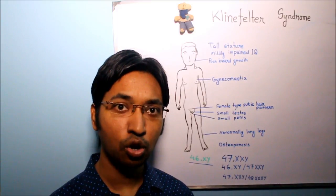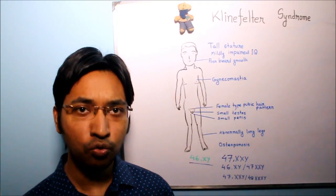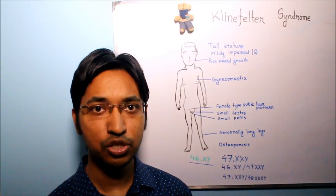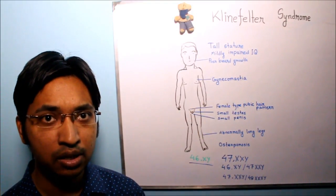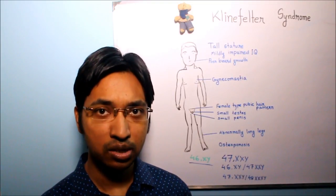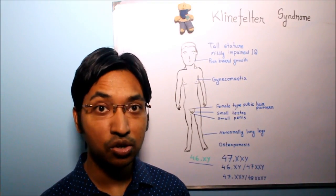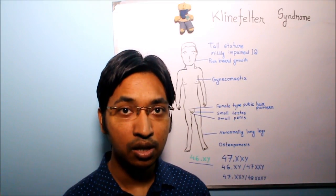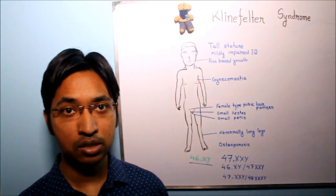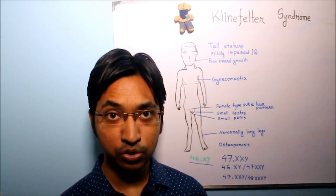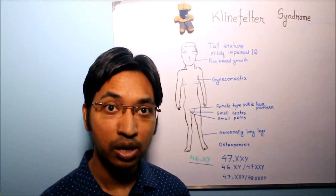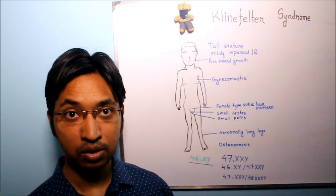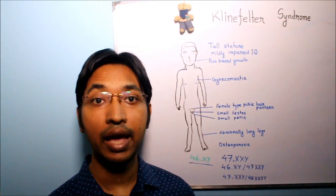That is, during formation of ovum or sperm. Recall that ovum and sperm are gametes and they are formed by meiotic cell division. But sometimes there may be a random error in meiotic cell division called non-disjunction. Due to this error there will be unequal distribution of X chromosomes among the daughter cells, resulting in formation of a gamete that has more than one X chromosome or an extra X chromosome.